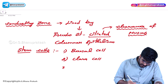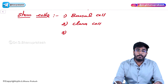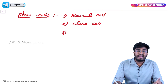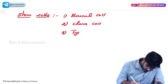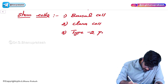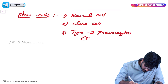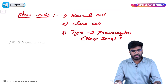In the respiratory tract, there is one more cell which is acting as a stem cell, but it's not a part of conducting zone - rather it's a part of respiratory zone. That cell is type 2 pneumocytes. Type 2 pneumocytes are present in respiratory zone, not in conducting zone. It's an important point.